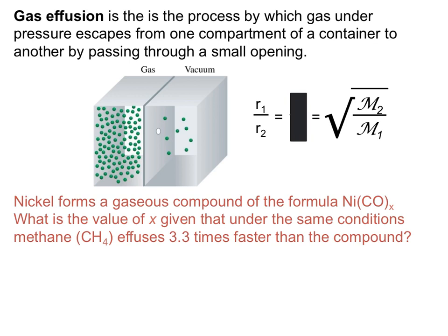Let's go ahead and look at the question we have here. It says that nickel forms a gaseous compound of Ni(CO)x, and they want us to figure out what the value of x is, given that under the exact same condition, methane effuses 3.3 times faster than the Ni(CO) compound.